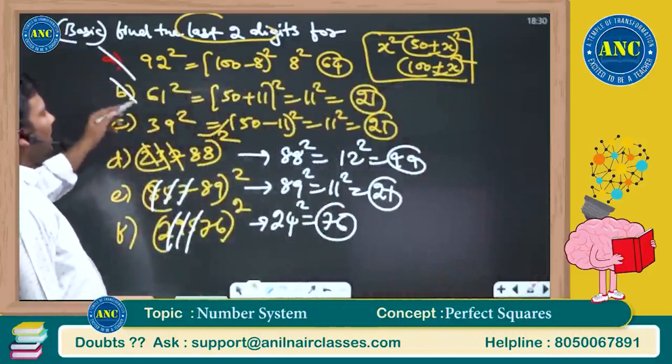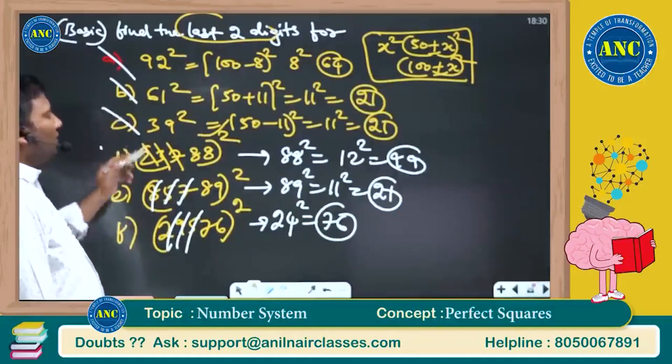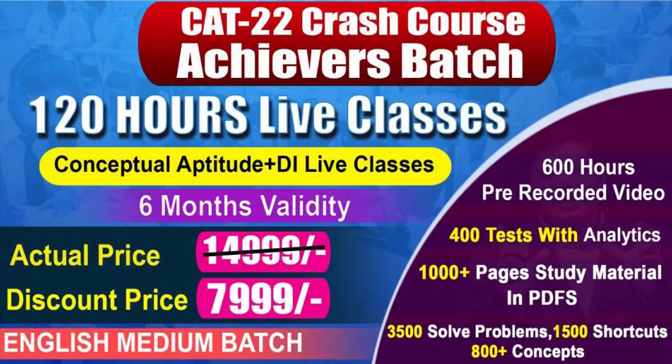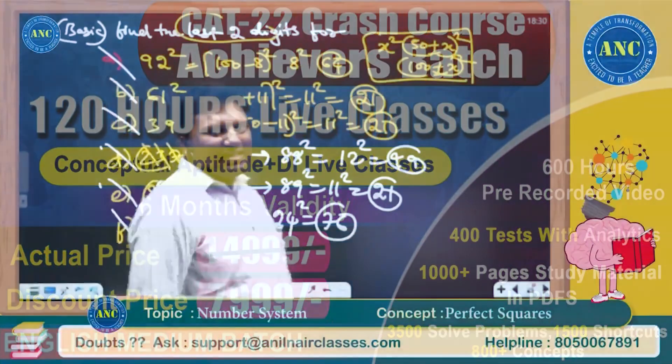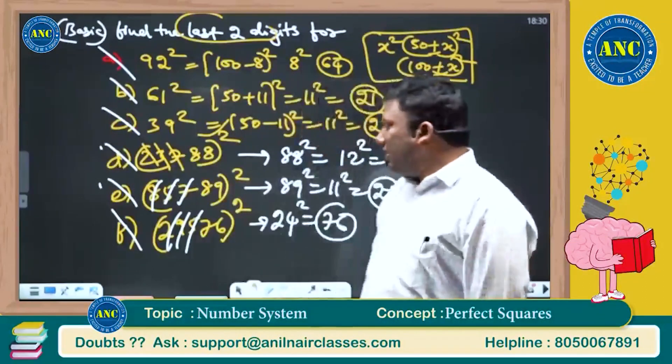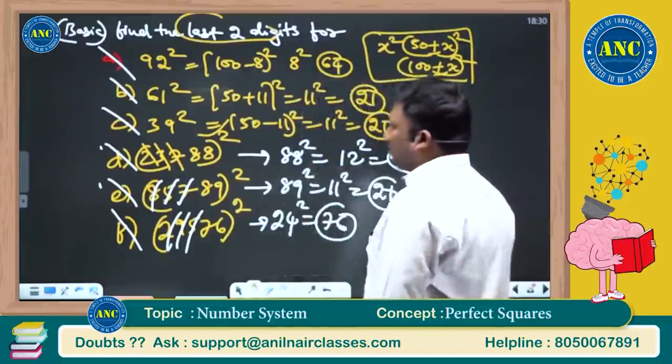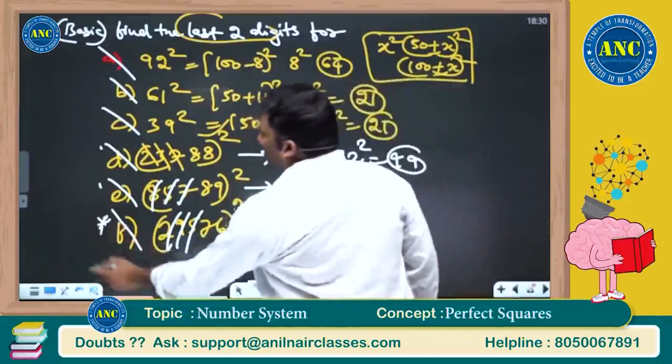All are clear, right? How much less than 100? 8. How much more than 50? 11. How much less than 50? 11. How much less than 100? 12. How much greater than 50? 26. 26 square is 676, or 24 square is 576. These are very basic questions.